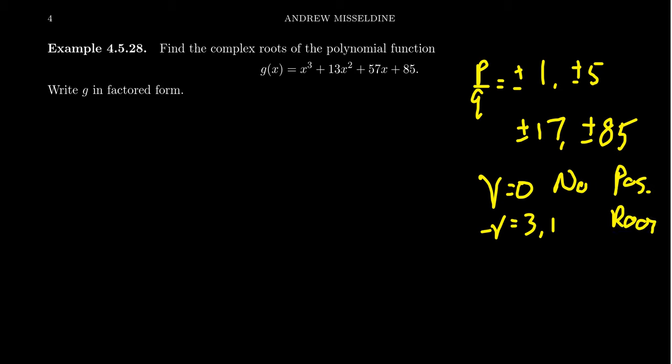That is a very helpful statement. So now I'm not going to be looking for the positive roots whatsoever, because there are none. So what I'm going to do is amend my previous list and emphasize that I'm only going to look for negative numbers: negative 1, negative 5, negative 17, negative 85.